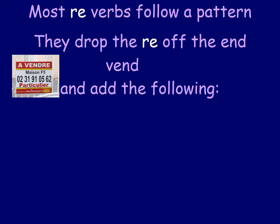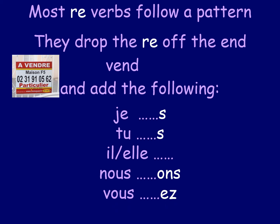For 'je' (I sell) you add an S — 'je vends' — you don't really pronounce it. For 'tu' (you sell) you also add an S — 'tu vends ta maison'. For il and elle (he/she) we don't add anything — just leave the stem as is, ending in D. For 'nous' we add ONS, for 'vous' we add EZ, and for 'ils/elles' we add ENT. So the endings are: S, S, nothing, ONS, EZ, ENT.